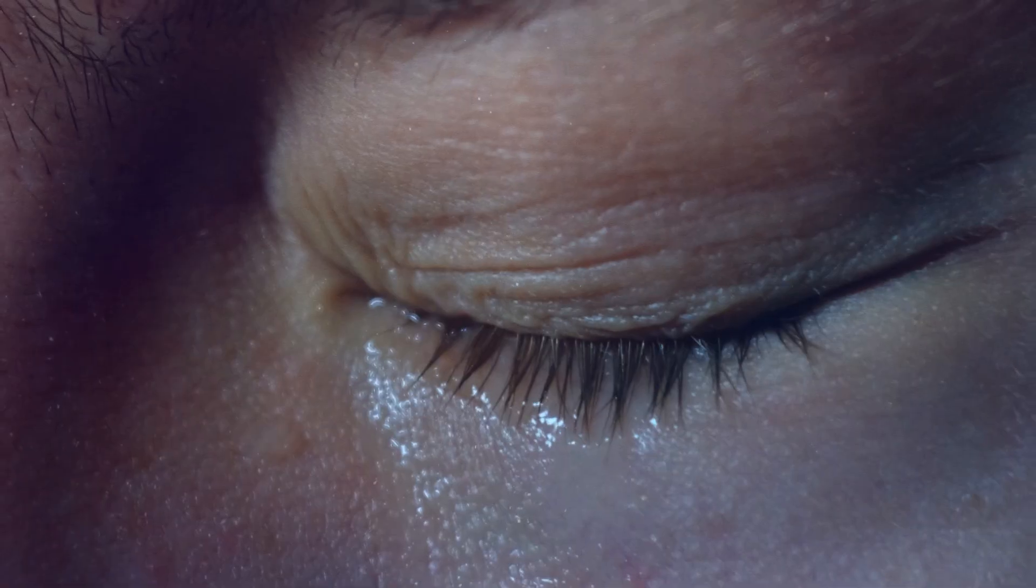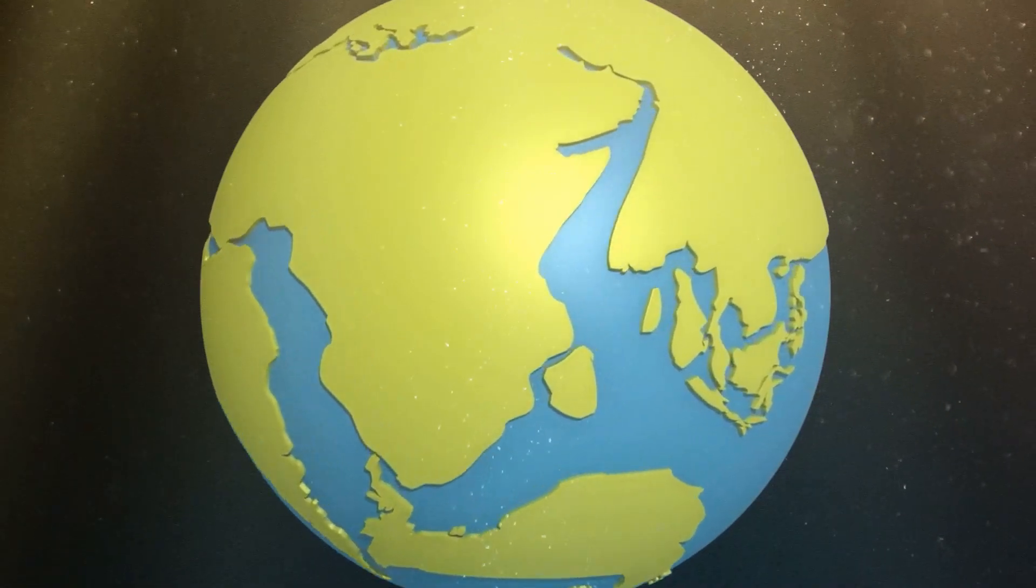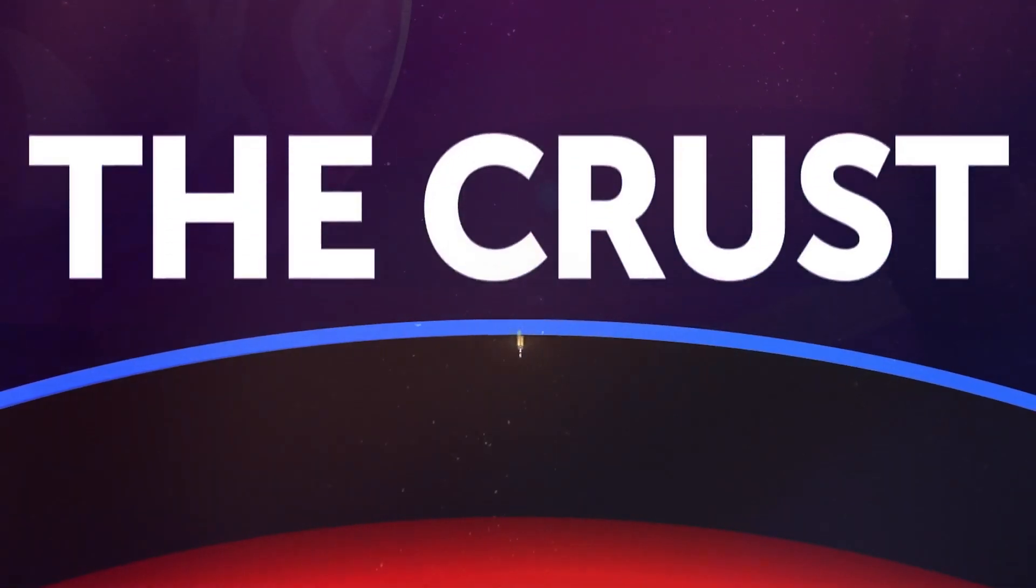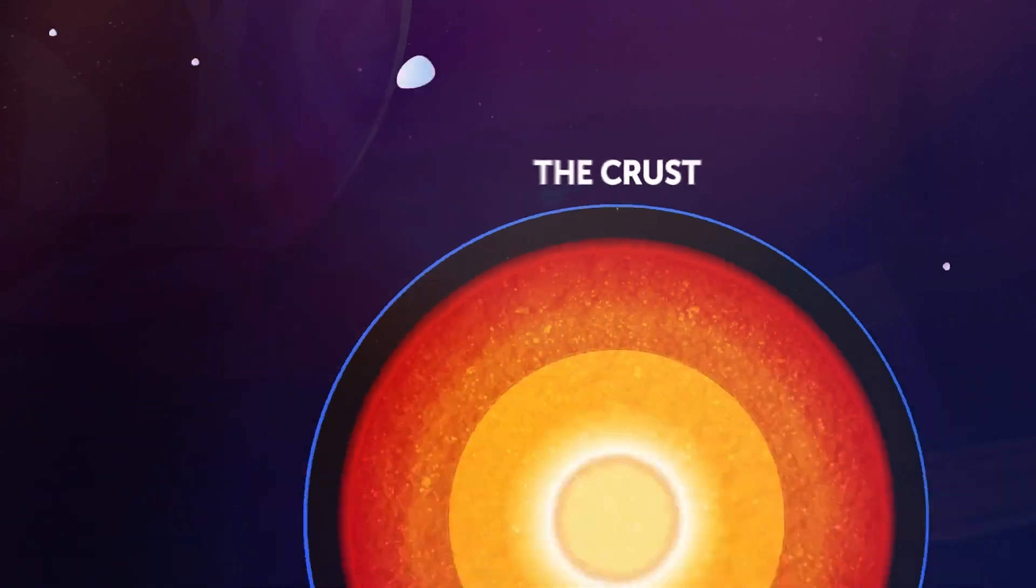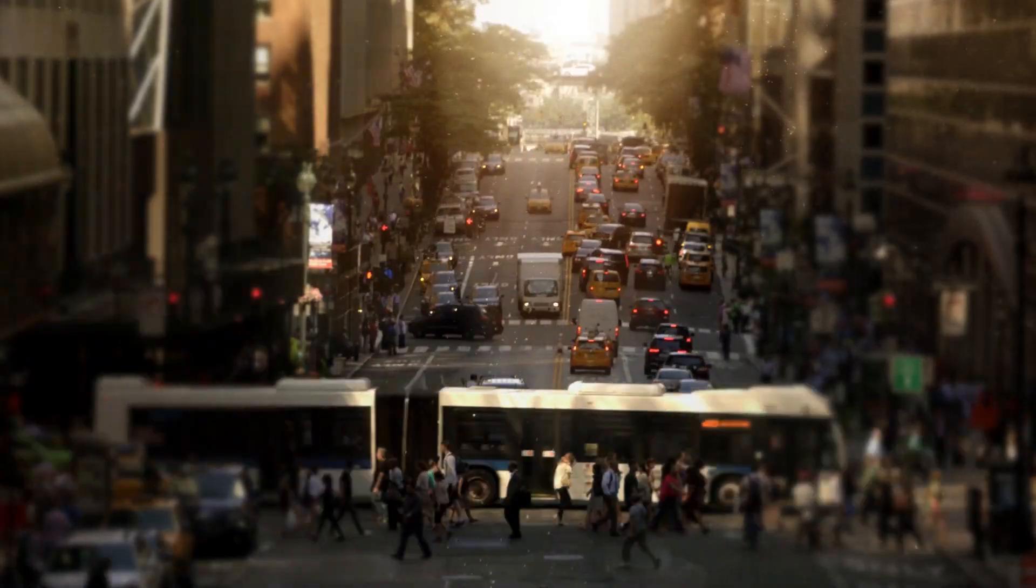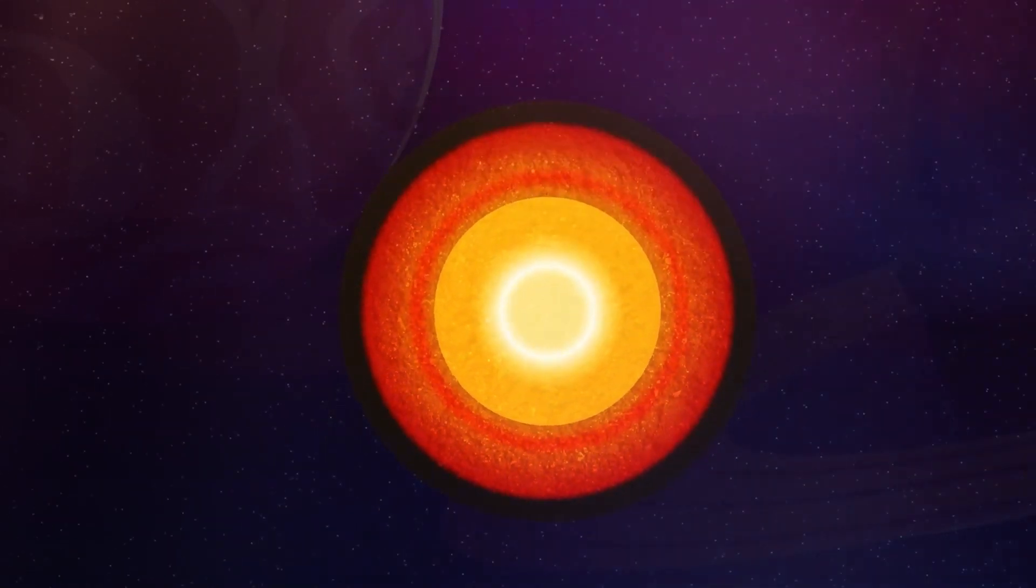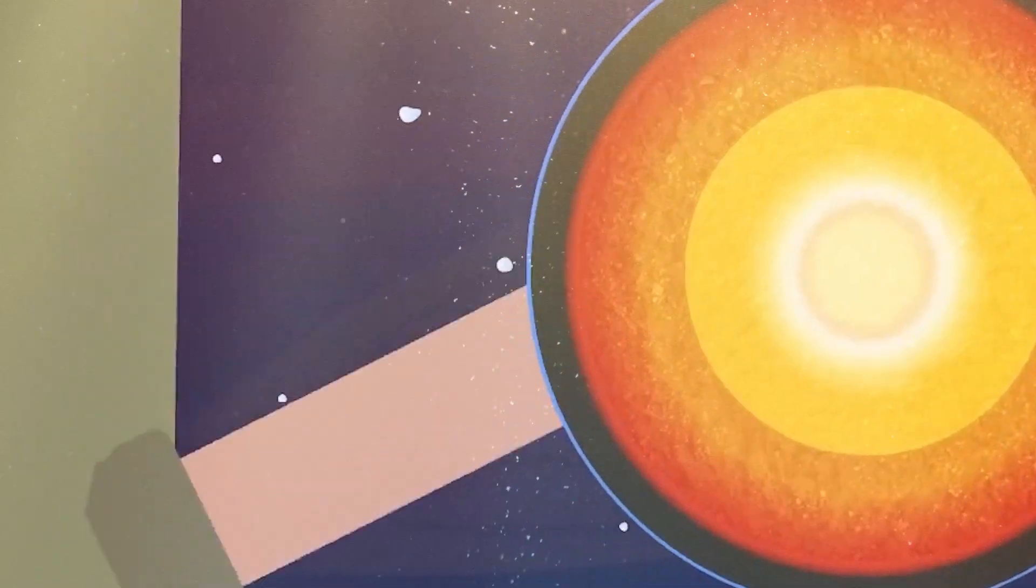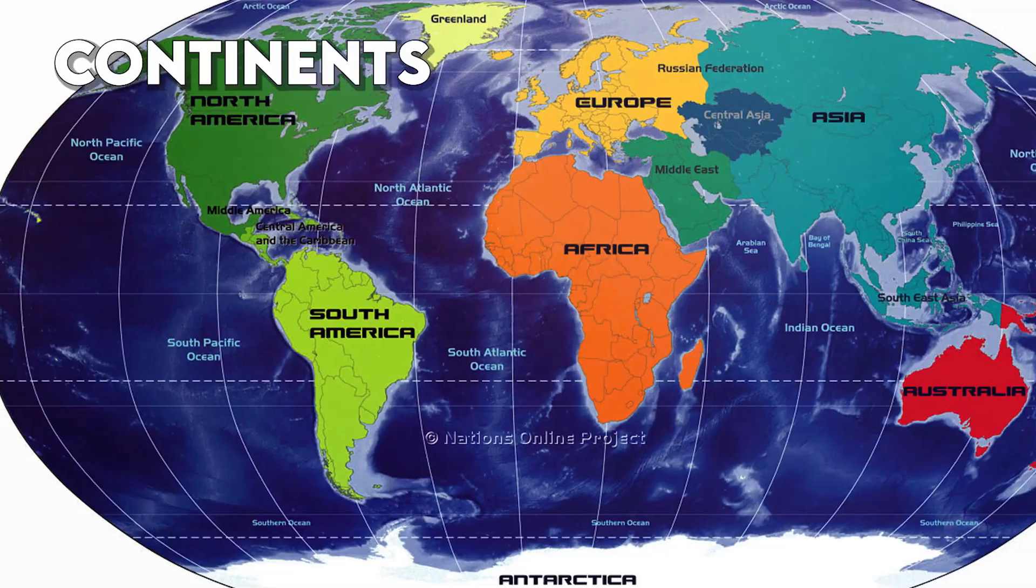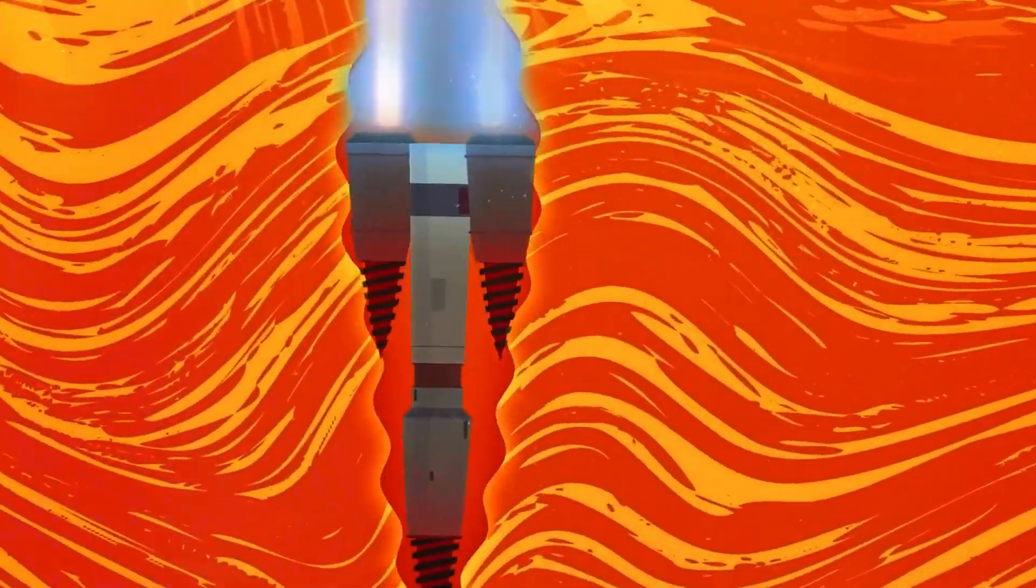All right, let's break down our home planet like we're peeling an onion, but without the tears. Starting from the outside and working our way in, we've got the earth's crust averaging about 8 to 40 kilometers thick. This is where we live, build our cities, and take beach vacations. This layer is pretty thin, making up only about 1% of the earth's total volume.